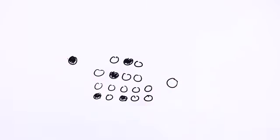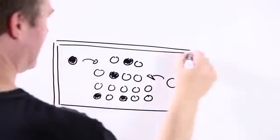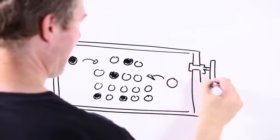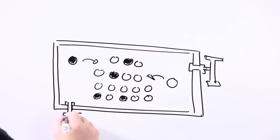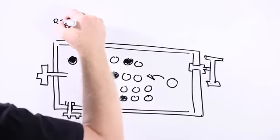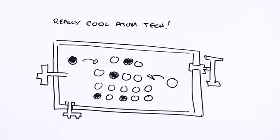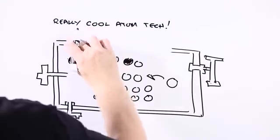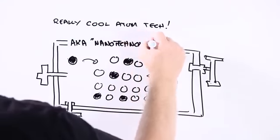But over the past few years, scientists and engineers have become increasingly good at designing and engineering materials down at the level of atoms or small groups of atoms. And because this new technology involved doing stuff at such a minute scale, it's called nanotechnology.